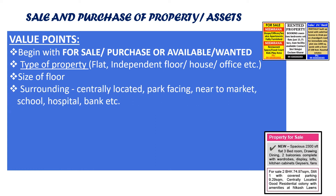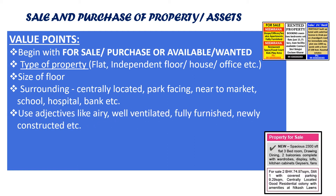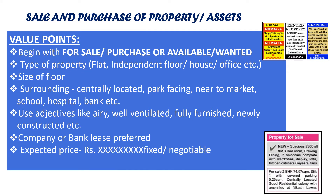After that, talk about surroundings — centrally located, park-facing, near-to-market, school, hospital, bank, etc. Use adjectives like airy, well-ventilated, fully-furnished, newly-constructed, etc. Then mention company or bank lease. For expected price, either quote the amount or just write 'negotiable.' In the end, mention contact address, phone number, and email ID.